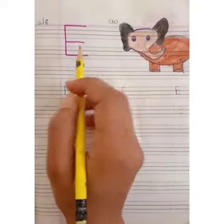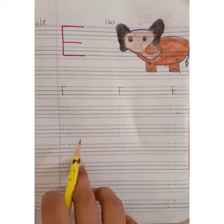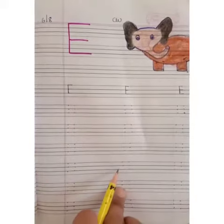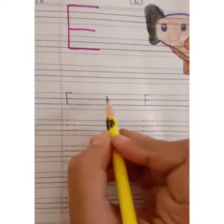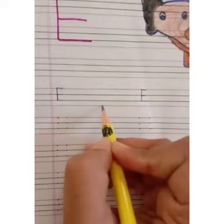Good morning kids. Today's our work is E in English copy. As you all know, this is your English copy. It is having four lines. One, two, three, four.